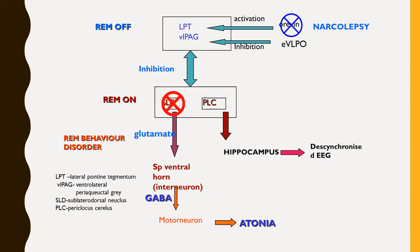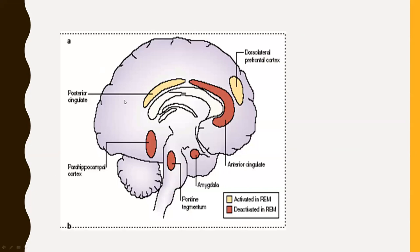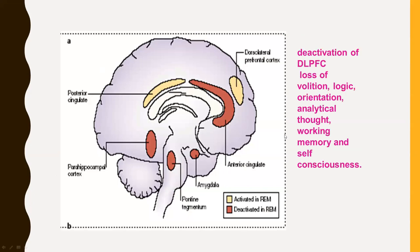Why is there REM sleep intrusion in narcolepsy? When there is degeneration of orexin, along with making wake very unstable, it also fails to inhibit REM-off neurons, which in turn activates REM-on neurons, and these more active REM-on neurons intrude into wake. This slide also tells us that there will be deactivation of the dorsolateral prefrontal cortex during REM sleep, which is responsible for the loss of volition — logic is not followed, analytical thinking is lost during the dream state — associated with memory and self-consciousness.